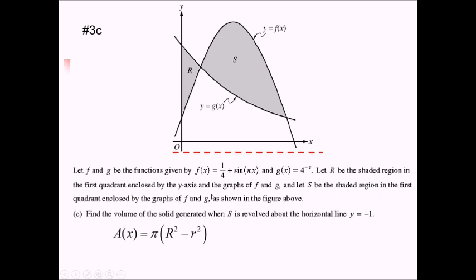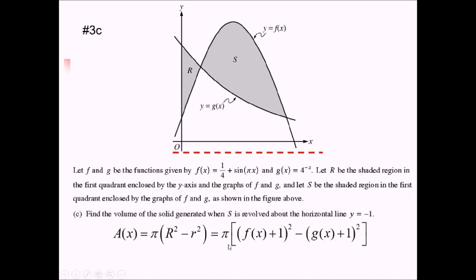Big R is the distance between my axis of revolution and the further away part of the boundary — that's F of x minus negative 1, or F of x plus 1, squared. Little r is the inner distance between the closer part of the boundary and the axis of revolution — that's G of x minus negative 1, or G of x plus 1, squared. So the volume is the integral from A to 1 of A of x dx, which is pi times big R squared minus little r squared.